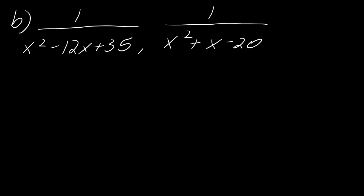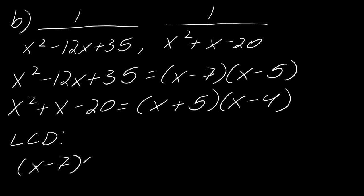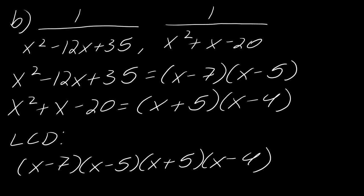One more example. Factoring both denominators gives (x − 7)(x − 5) and (x + 5)(x − 4). This one is here to keep you on your toes: there's nothing in common between these two factorizations. When you don't have things in common, you do actually multiply all the factors together to get the LCD. We're always looking for overlap, but when that doesn't happen you just write everything out — a gnarly LCD but a useful one for understanding the concept.